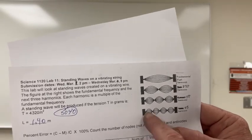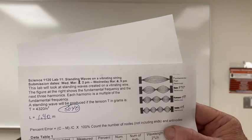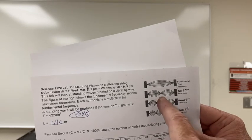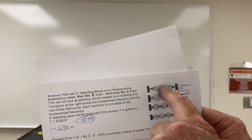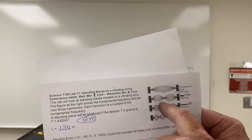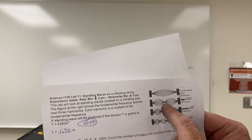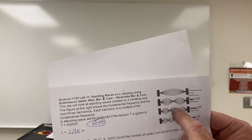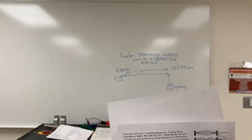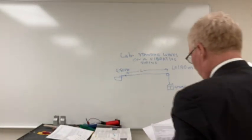We don't count the nodes at the end because the wire is fixed there, but for n equals one there are no nodes in the center, for n equals two we get one node in the center, for n equals three we get two nodes, and it goes four and so on.